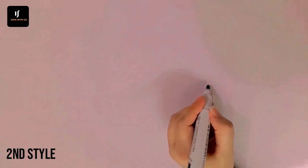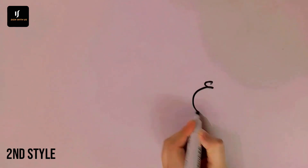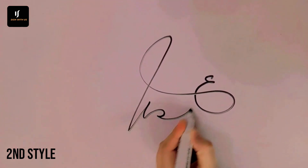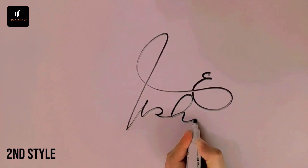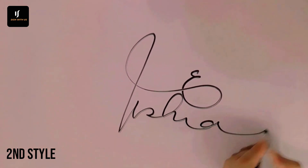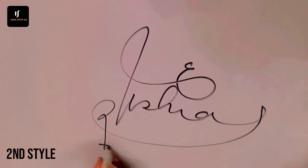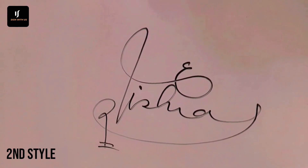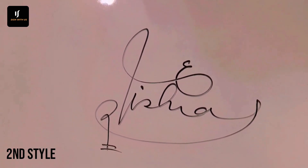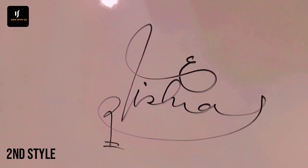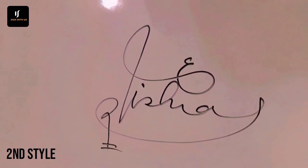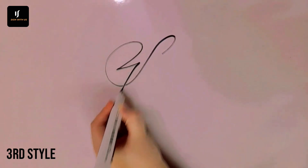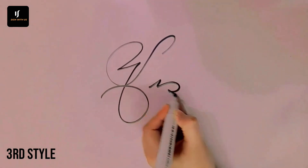Style 2 defines a distinctive use of texture and pattern. Style 3 introduces the traditional way combined with modern techniques.